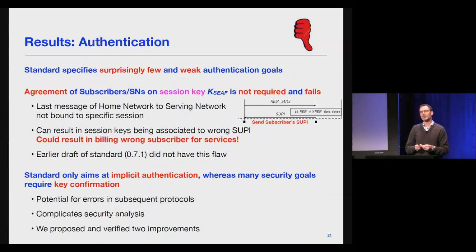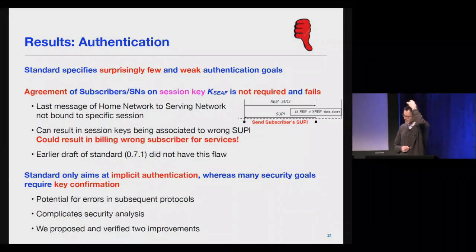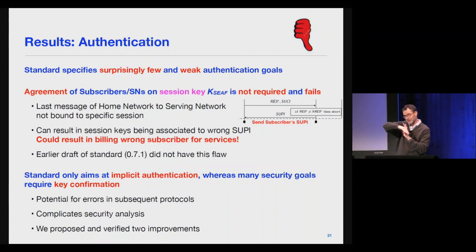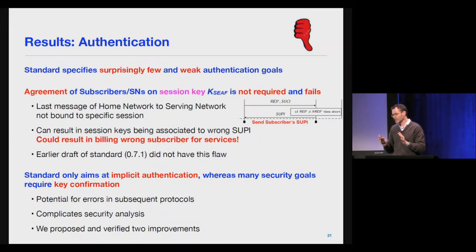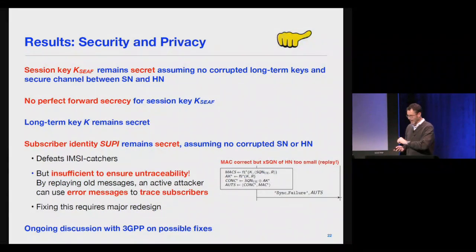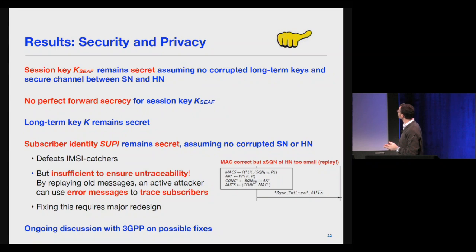Formal methods can help catch simple mistakes like this — it's almost like type checking. There are other issues one could debate: the standard aims at only implicit authentication, meaning agreement on the key and identity of the partner only after the key is used. Whether that's acceptable depends on how the protocol will be composed with other protocols. I would argue you should always try to have explicit authentication, and it turns out it's very easy to achieve in this protocol with very minor modifications and no additional cryptography.